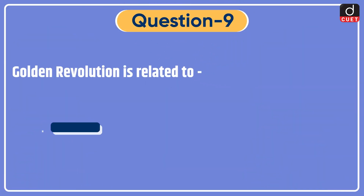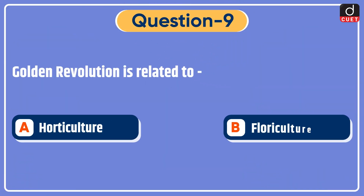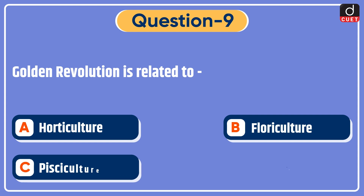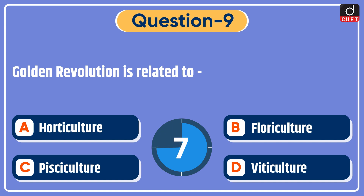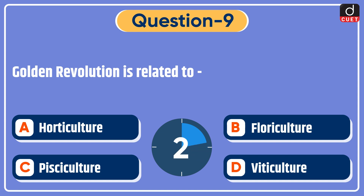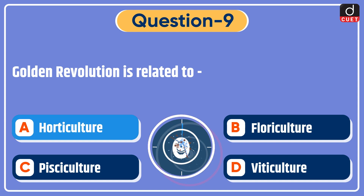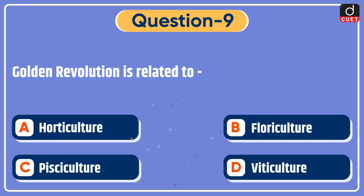Next question: golden revolution is related to horticulture, floriculture, pisciculture, or viticulture? The correct answer is option A — horticulture.